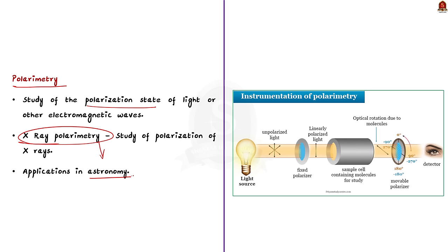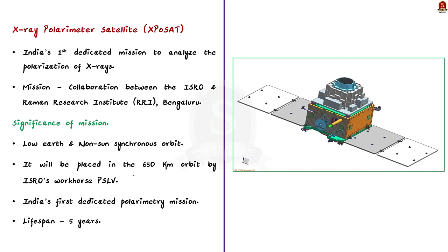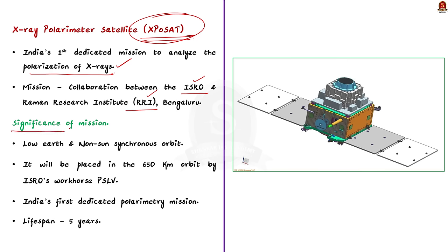XPoSat is India's first dedicated mission to analyze the polarization of X-rays emitted from distant celestial objects. The mission is a collaboration between ISRO and the Raman Research Institute in Bengaluru. XPoSat is placed in low Earth orbit at 650 kilometers, using the PSLV launch vehicle. The satellite will carry two scientific payloads: an X-ray polarimeter, and an X-ray spectroscopy and timing instrument.